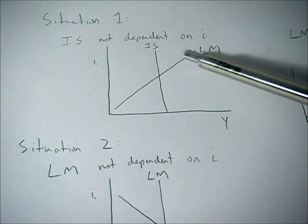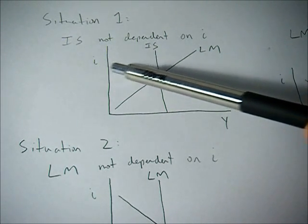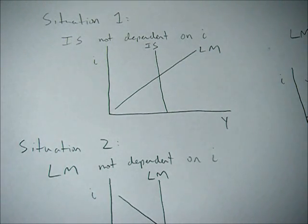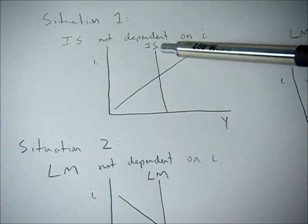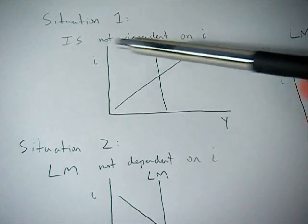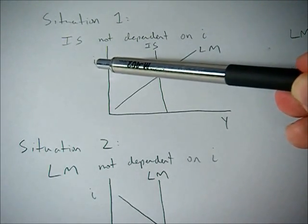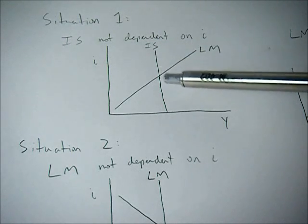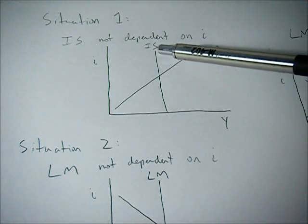So if the IS curve is not dependent on the interest rate, so investment doesn't change as the interest rate changes, which is weird but possible, then you're going to get this straight up and down vertical IS curve, because no matter what the interest rate is, investment and GDP is going to be the same.